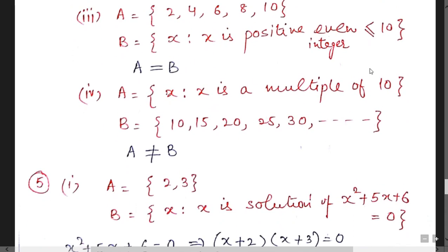Multiple of 10. It means 10, 20, 30. These are required. But in the set B, 15, 25 is also there. It means sets are not equal.